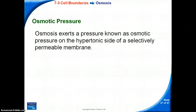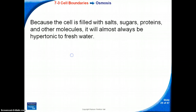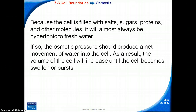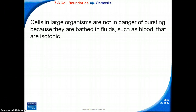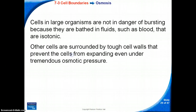Osmotic pressure: osmosis exerts a pressure known as osmotic pressure on the hypertonic side of a selectively permeable membrane. Because the cell is filled with salts, sugars, proteins, and other molecules, it will almost always be hypertonic to fresh water. As a result, osmotic pressure should produce a net movement of water into the cell, and the volume of the cell will increase until the cell becomes swollen or bursts. Cells in large organisms are not in danger of bursting because they are bathed in fluids such as blood that are isotonic. Other cells are surrounded by tough cell walls that prevent the cells from expanding even under tremendous osmotic pressure.